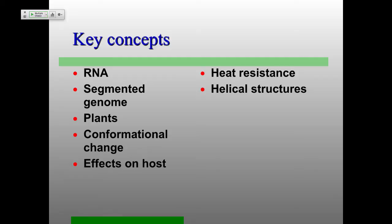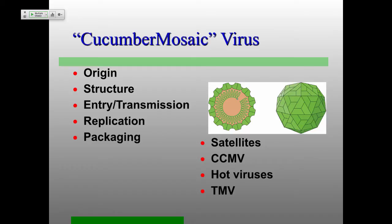The helical structures will come up again when we get to TMV. We'll start with CMV, cucumber mosaic virus. Part of the problem with naming viruses based on the species they infect is when they infect multiple different species — that's the major issue with cucumber mosaic virus, which infects all kinds of different plant species.